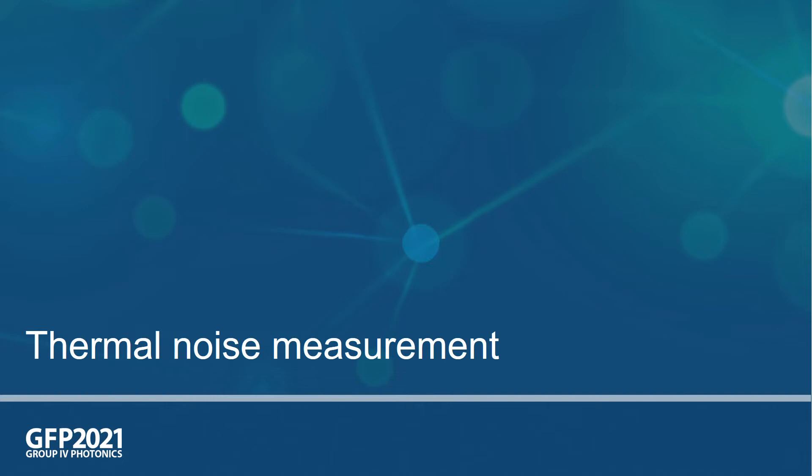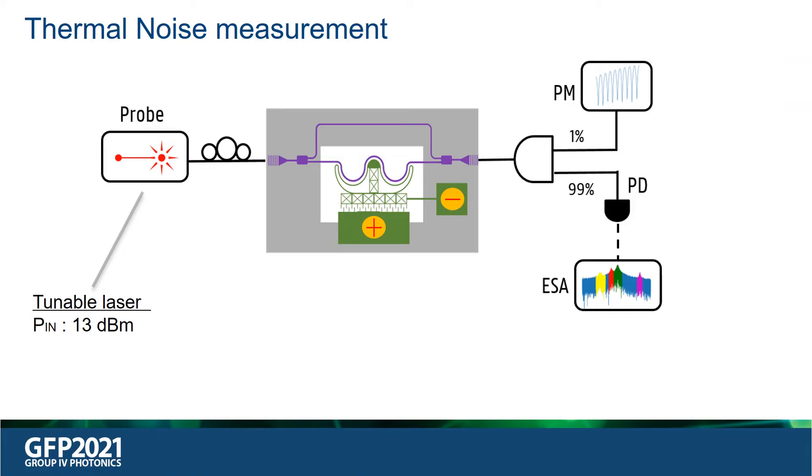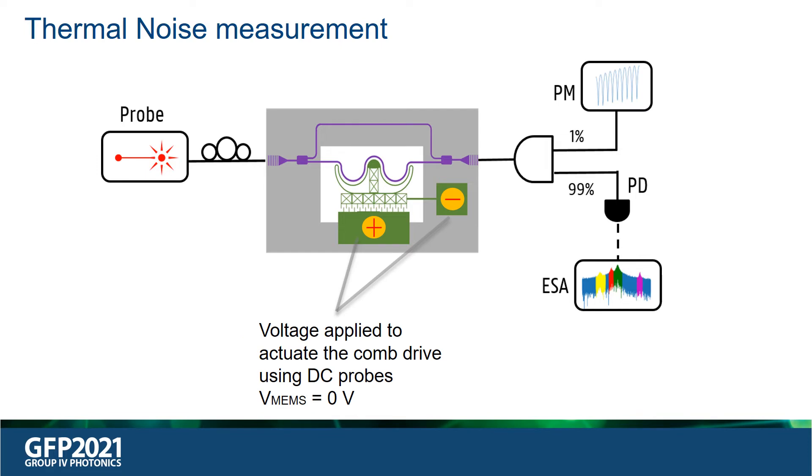The experimental setup is shown here. We have a Santec tunable laser that acts as a probe that injects 13 dBm of optical power into the input grating coupler of the device. The sealed chip is maintained at the constant temperature of 23 degrees Celsius. Bias voltage can be applied to the comb drives via bond pads and DC probes. But for our thermal noise experiments, we set the driving voltage to be zero.